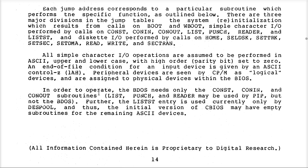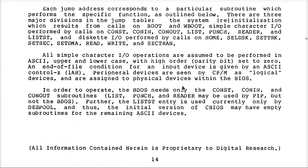The alteration guide says in order to operate, the BDOS needs only the console status, console in, and console out routines — these other routines might be used by the PIP program later on. It also says the list status entry is currently used only by one specific kind of application, therefore your initial customized BIOS can have empty subroutines for all the other I/O devices. This is a little bit misleading because it leaves out the fact that it also wants all the disk routines — what they mean is these are the only character-based devices that it needs.